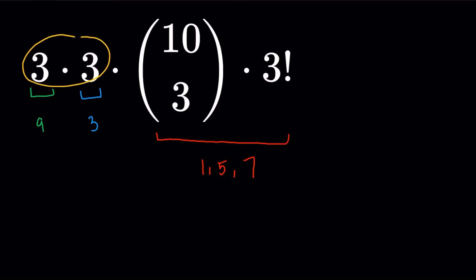All right, so three times three, that's just nine. Now 10 choose 3, that's going to be 120. And then three factorial would be six. So nine times 120 times six, that's going to give us the final answer of 6480.